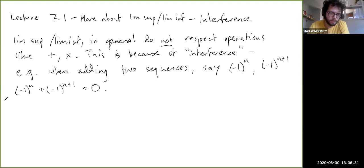Of course, the lim sup here is one, the lim sup here is one. So naively, if you didn't think very hard about this, you might expect that the lim sup of the resulting sequence would be two, but it's actually zero. And that's because these sequences are basically interfering with each other.